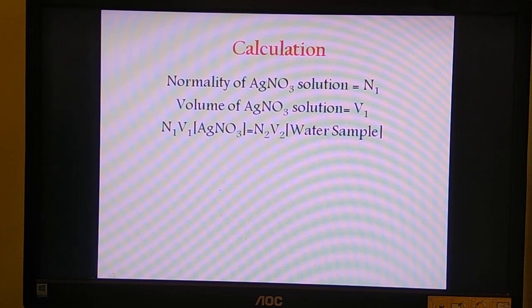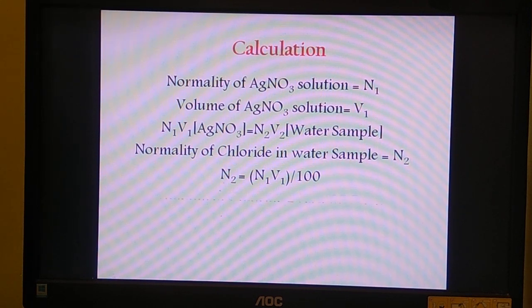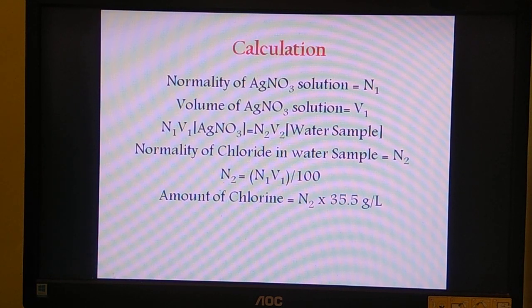We know N1, normality of AgNO3. We know V1, burette reading. We know V2, that is 100 ml test sample or water sample taken. We need to calculate the concentration or normality of chloride, that is N2. So the normality or concentration of chloride is N2, that is equal to N1V1 divided by 100. Once you get the normality of chloride ion, normality multiplied by the equivalent mass will give you the amount of sample. So the amount of chloride is equal to N2, that is its normality, multiplied by 35.5.